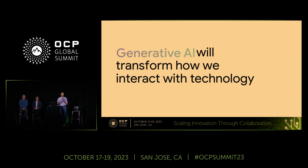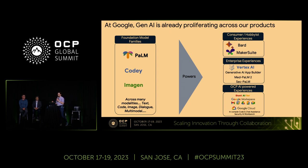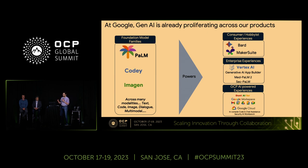Generative AI is really transforming the way we think about technology. Even at Google, we have a small number of models — Palm, Codey, Imagen, and others — which are driving an immense diversity of use cases, everything from consumer-grade Bard, all the way up to enterprise-grade Vertex, which is pretty astonishing.